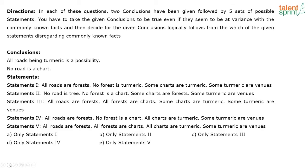In the conventional way, you look at the first set of statements, draw the Venn diagram, and check whether the conclusion is satisfied. Then you draw the Venn diagram for the second set, and so on for each option — which is very time consuming. The best way to solve reverse syllogisms is to try to eliminate a few options first.